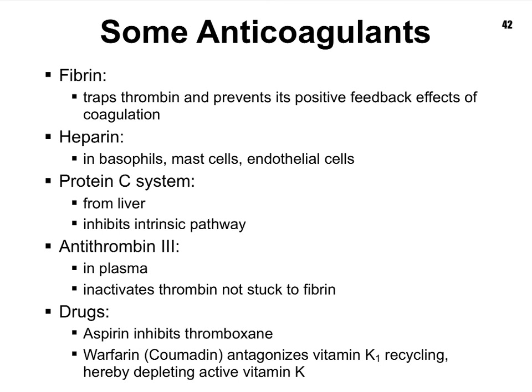Aspirin blocks or inhibits thromboxane A2, which is one of those platelet chemicals, making it difficult for the whole process of hemostasis to occur. Coumadin antagonizes the recycling of vitamin K, which therefore makes it difficult to have a constant supply of active vitamin K in the body. This then is the end of not just hemostasis, but also the steps that occur after hemostasis and some of the regulatory mechanisms involved in coagulation.